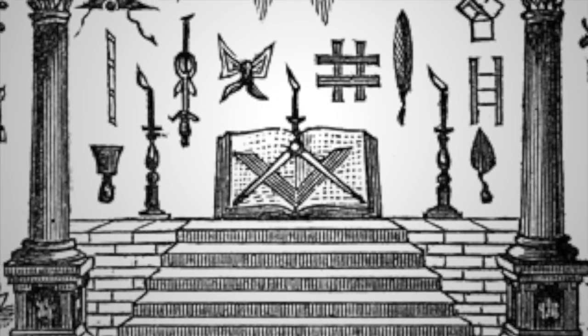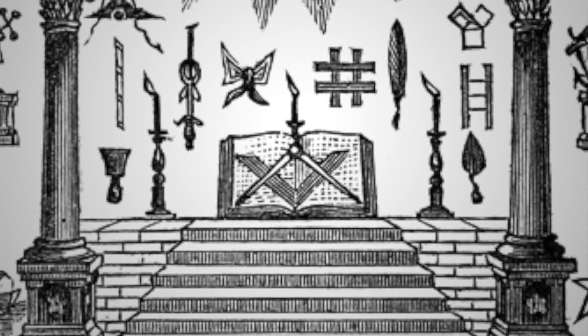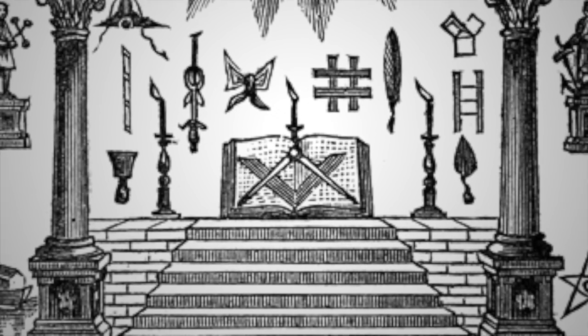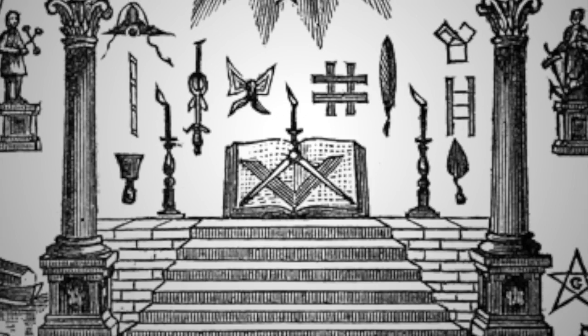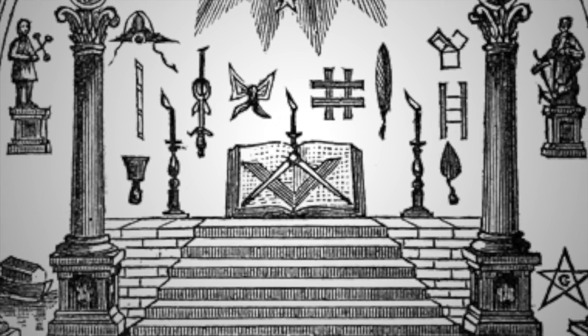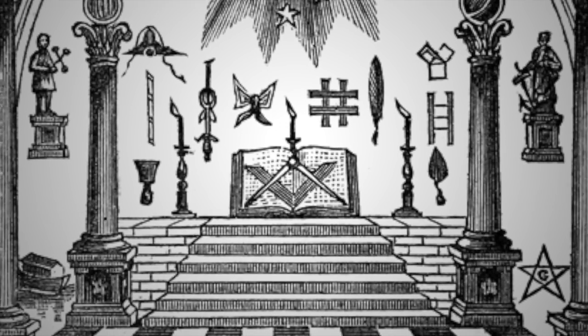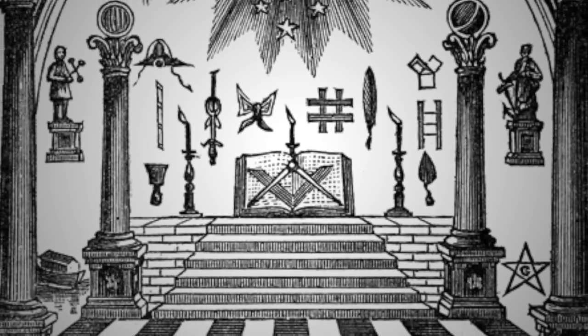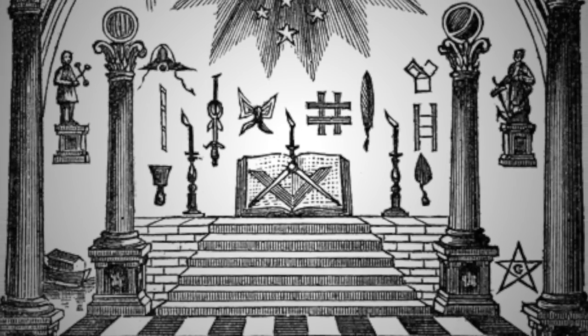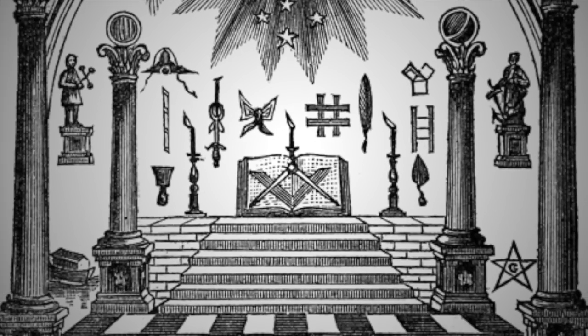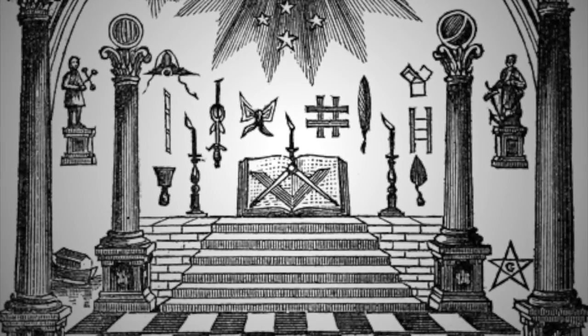Hence, it is not strange that Euclid, the most famous of geometricians, should be spoken of in all the old records as a founder of Freemasonry in Egypt, and that a special legend should have been invented in honor of his memory.